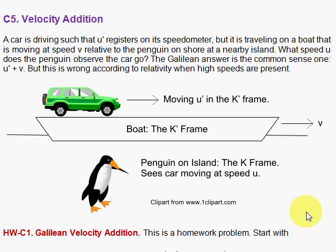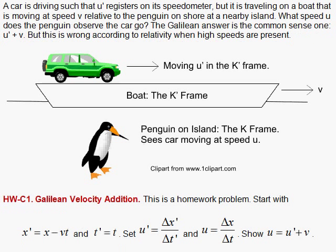We would like to derive this from the Galilean transformation. So we're going to set this up. x' is x minus vt, t' equals t, it's Galileo.